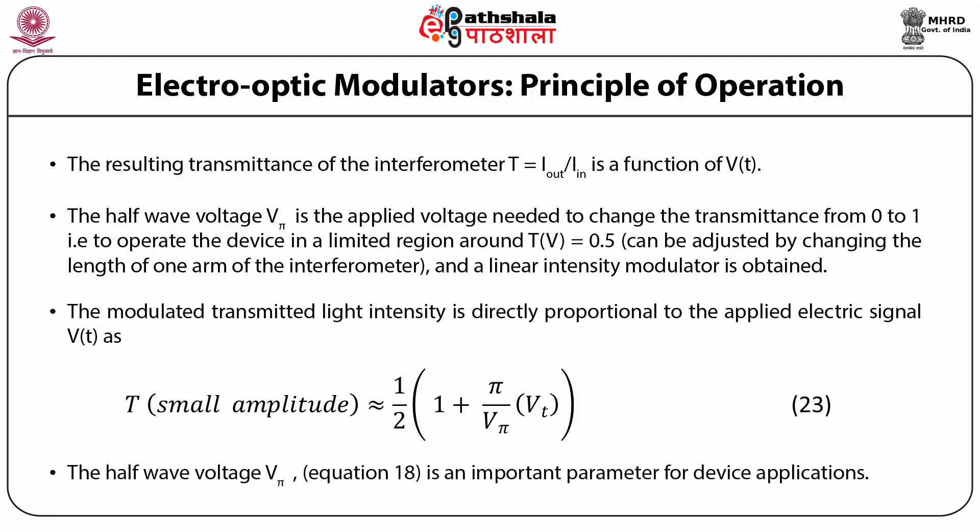The half-wave voltage V_π is an important parameter for device applications. It is minimized for each device geometry and carrier wavelength by maximizing n³r, which is the figure of merit for electro-optic material. V_π can also be reduced by optimizing the geometry — i.e. a long propagation distance L and short electrode distance D greatly reduce V_π.